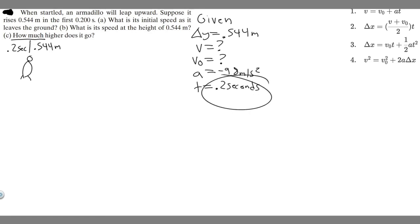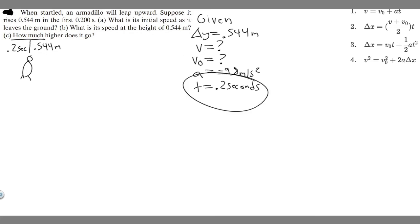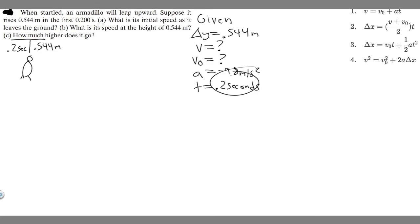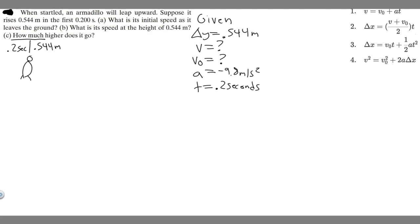Now we know our givens, let's start with Part A: what is the initial speed as it leaves the ground? We're solving for v sub 0. We need an equation containing delta y, t, and a — the variables we have. Looking at the kinematic equations, the best one to use is delta y = v sub 0 times t plus one-half times a times t squared. That's the only one we can use here.